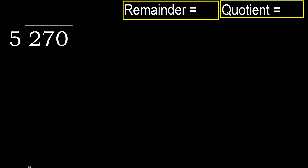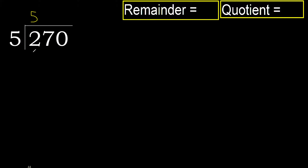270 divided by 5. 2 is less, therefore next. 27 is not less, therefore with 27 — 5 multiplied by which number is nearest to 27 but not greater? 5 multiplied by 6 is 30, 30 is greater. Multiplied by 5 is 25, 25 is not greater.